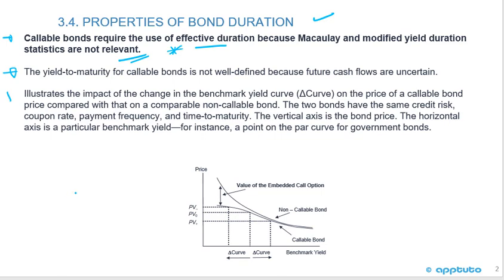The two bonds have the same credit risk, coupon rate, payment frequency, and time to maturity. The vertical axis is the bond price; the horizontal axis is a particular benchmark yield — for instance, a point on the par curve for government bonds.